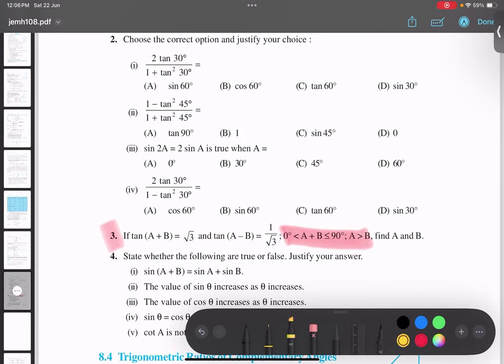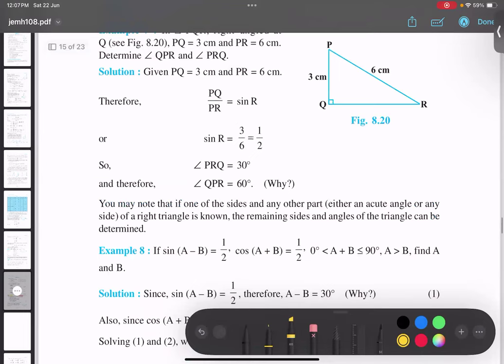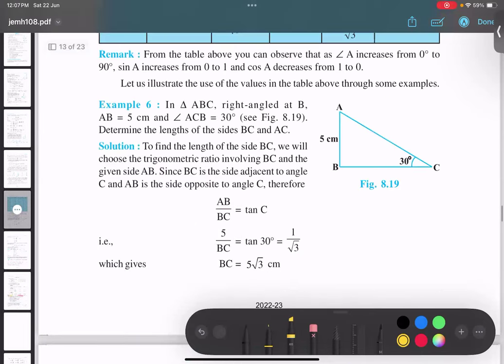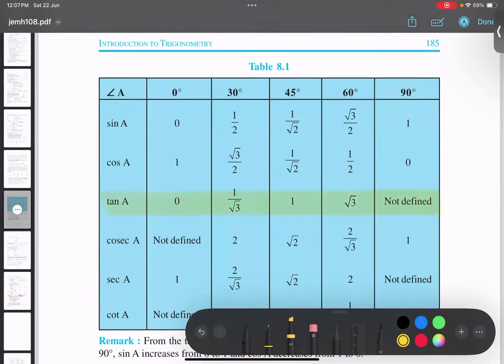We are asking you that tan(A + B) equals root three, so we have to go back to the table and check when is tan theta root three. Now let us go back, we'll look at the tan table.